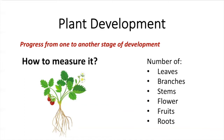To analyze plant development, we usually count the number of leaves, branches, stems, flowers, fruits, and roots.